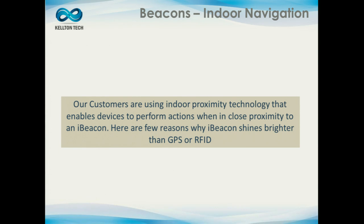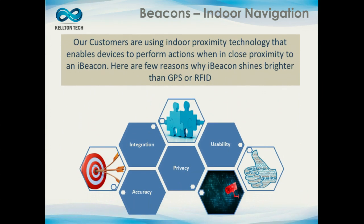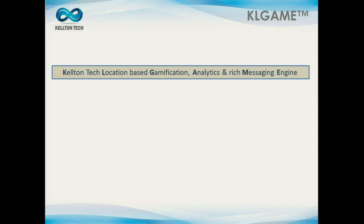Some of our customers are using indoor proximity technology with iBeacons to define actions. The reasons people choose iBeacons over GPS or RFID are: GPS only gives a lat/long location and you don't know your vertical position. These devices are low energy and work on proximity — you can set the range to five or twenty meters. There's a whole lot of privacy — they're not beaming your information everywhere. We have built what we call the Kelton Tech location-based gamification analytics and rich messaging engine.